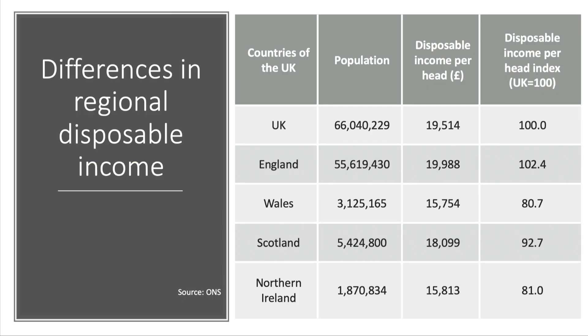That's the national figure for the UK. If we dig beneath the surface to the sub-national level, England is the only country within the UK to have a disposable income per head higher than the UK average. Northern Ireland, Scotland, and Wales are all well below the UK average in terms of disposable income per head.